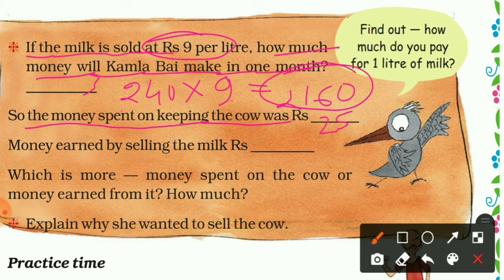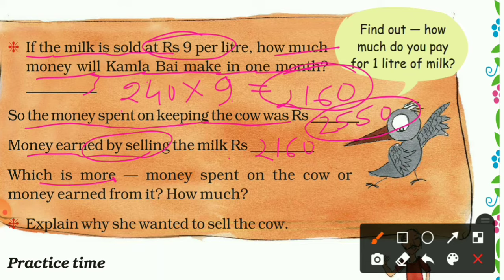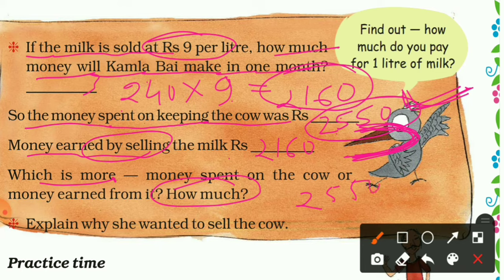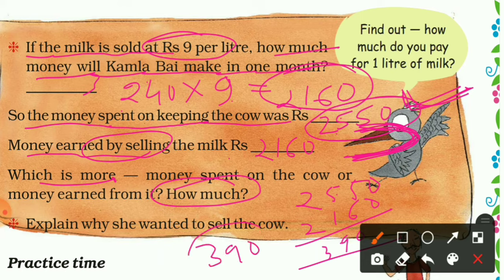The money spent on keeping the cow was 2,550 rupees and the money earned by selling the milk was 2,160 rupees. Comparing: 2,550 is more than 2,160. Subtracting: 2,550 − 2,160 = 390. Kamala Bai is spending 390 rupees more on the cow than she earns from it. That is why she wants to sell the cow — spending is much more than earning.